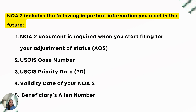Your NOA-2 includes important information you will need in the future. First, your NOA-2 document is required when you start filing for your adjustment of status once you are already in the United States after getting married. NOA-2 also contains the USCIS case number for tracking, the USCIS priority date, the validity date of your NOA-2, and most importantly, the beneficiary's alien number.